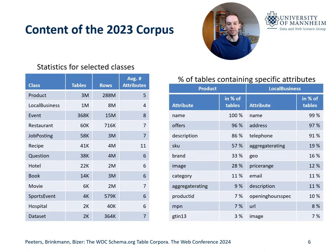These two tables give an insight into some of the entity classes and their size statistics on the left, as well as the attributes of the tables for the two example classes product and local business on the right. Note that the tables do not just share the same schema, but further contain identifiers like SKU, MPN, or telephone numbers that can be used to directly link entities across tables.